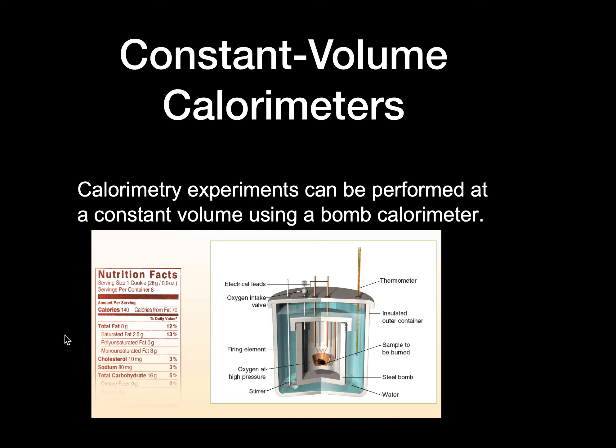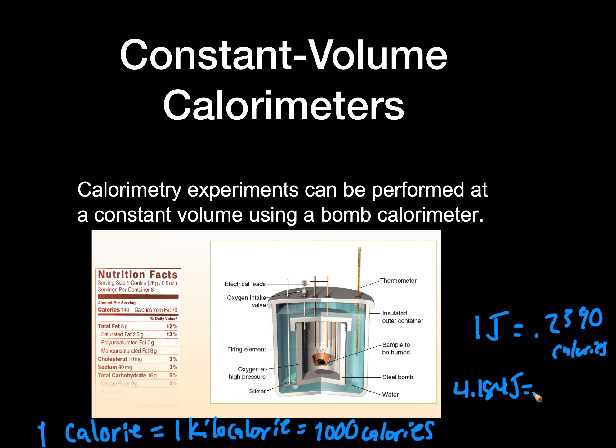According to the nutrition label, each serving contains 140 calories. How many kilocalories is this? There's a few conversion factors we need: one calorie (capital C, food calorie) is equal to one kilocalorie, which is equal to a thousand calories (lowercase). One joule is equal to 0.2390 calories, and 4.184 joules is equal to one lowercase calorie.